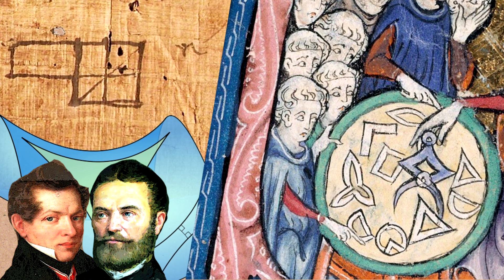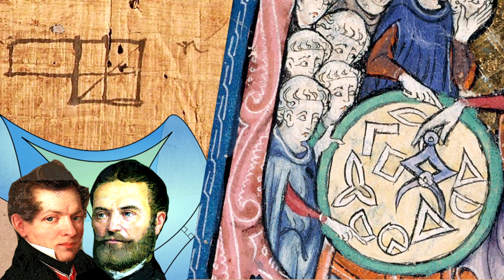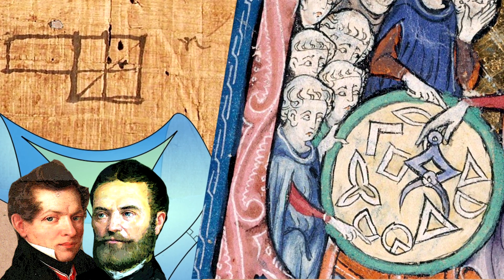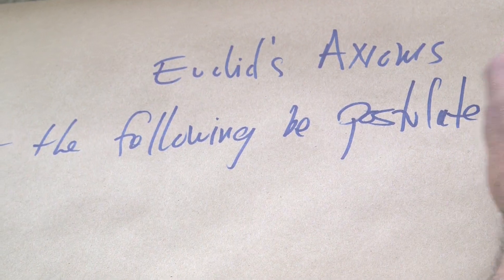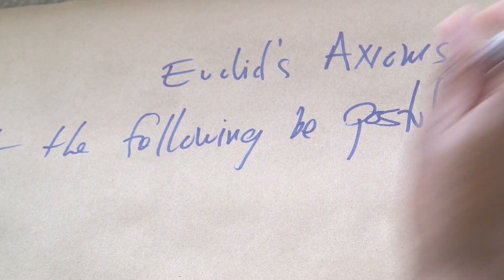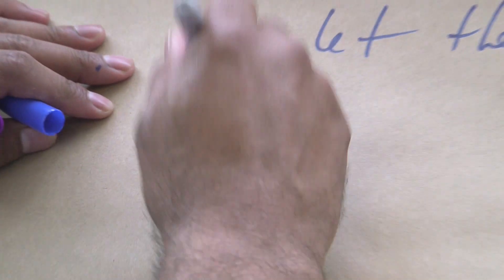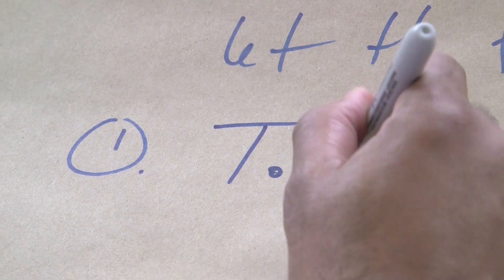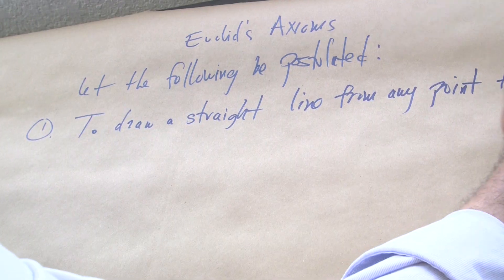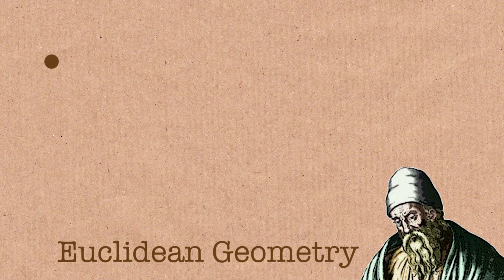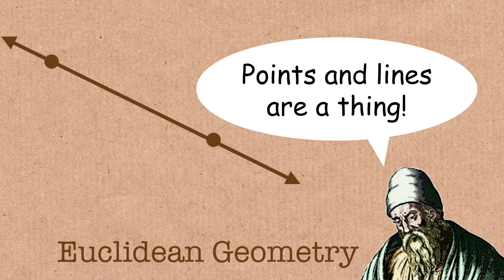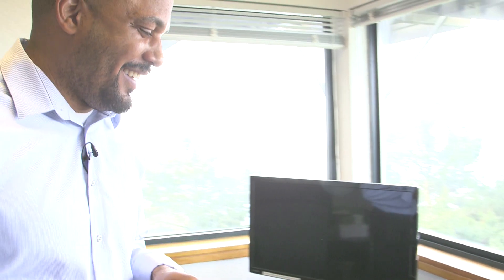So the axioms — there are five — and the axioms are about geometry, so geometrical figures. Let's start with number one. Let the following be postulated: one, to draw a straight line from any point to any point. We have points and lines, and we can connect two points with a line. That's pretty simple.